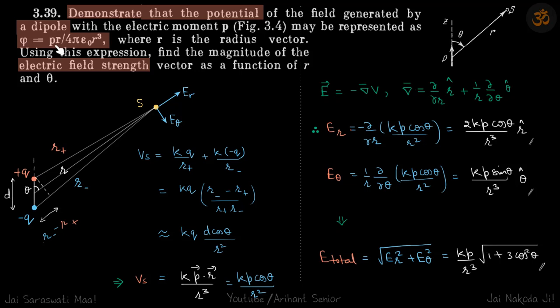Now we have already proven this is the potential. Using this we need to find the electric field. Electric field is -∇V, and the del operator in polar form is ∂/∂r r̂ plus (1/r)∂/∂θ θ̂. We'll use this on our potential.